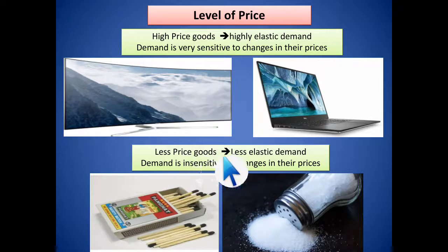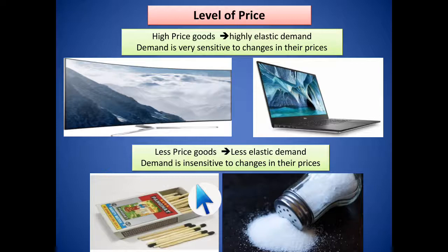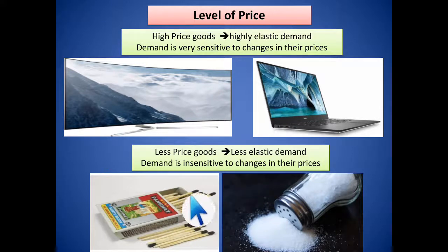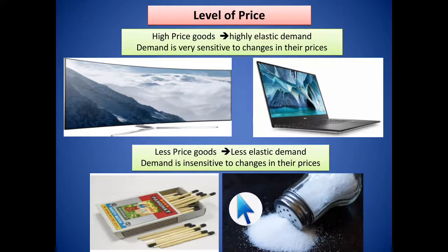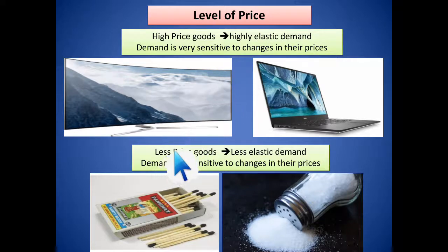In case of low-priced goods, demand is less elastic. For example, salt costs around 20 to 30 rupees and a matchbox costs one to two rupees. Even if the price of salt declines, you won't buy ten packets instead of five because you can only use so much. Any price change does not significantly affect consumer behavior for such goods, making them less elastic. Remember: high-priced goods are highly elastic, low-priced goods are less elastic.